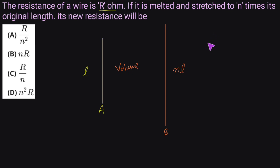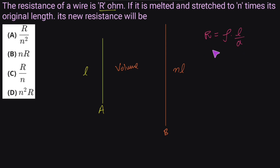The formula we generally apply when the physical dimensions — that is, the length and area of cross-section — of a conductor are given is: resistance R equals rho times l upon a. Here, rho is the resistivity, which depends purely on the material used. If we apply this formula for the original conductor, R equals rho times l upon a.